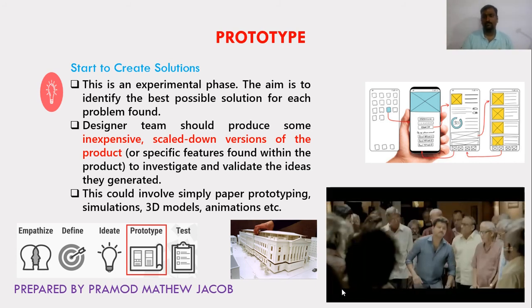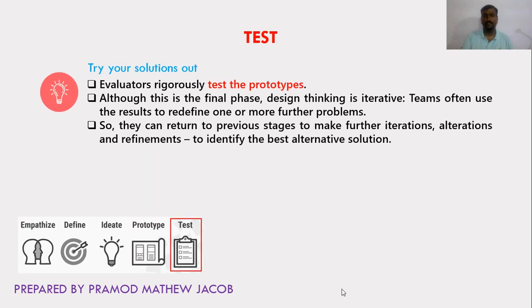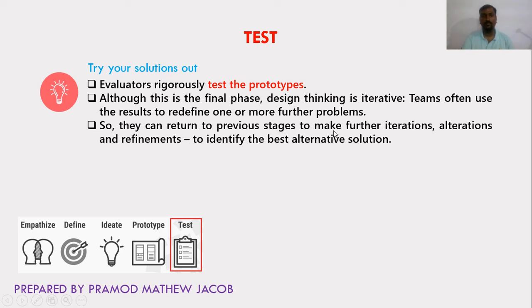The final phase is Test. After finding solutions using simulation or prototyping, we test whether the solutions work in a real-time environment. The evaluators rigorously test the prototype. Although this is the final phase, design thinking is iterative — so after testing, if an error or issue is identified, the process reverts back. The Ideate or Prototype phase is iterated repeatedly until the product is built and tested successfully, returning to previous stages to make further iterations, alterations, and refinements to identify the best alternative solution.